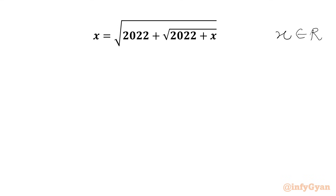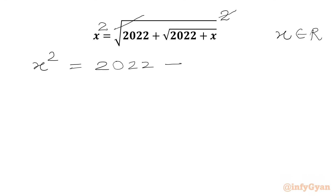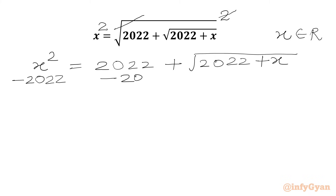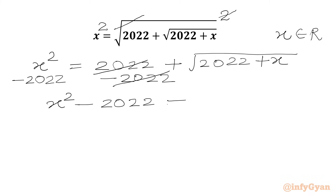Let's get started by squaring both sides, as we have a square root in the RHS. We can cancel the square root with the square and write X squared equals 2022 plus the square root of 2022 plus X. Now we are going to subtract 2022 from both sides, so plus and minus 2022 will cancel from the RHS.